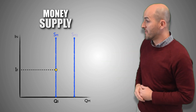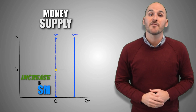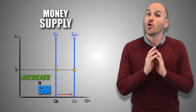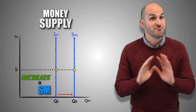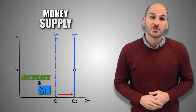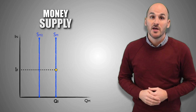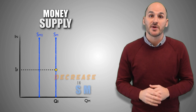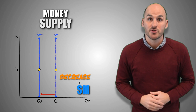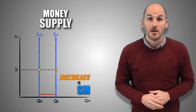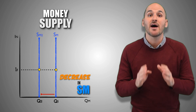A rightward shift of the money supply curve indicates that the supply of money has increased, and a greater quantity of money is now available for use, no matter the nominal interest rate. Banks and financial institutions now have more money. A leftward shift of the money supply curve indicates that the supply of money has decreased, and a lesser quantity of money is now available for use, no matter the nominal interest rate. Banks and financial institutions now have less money.